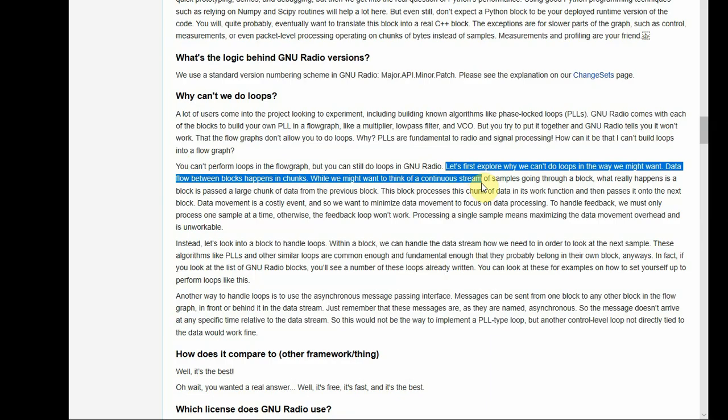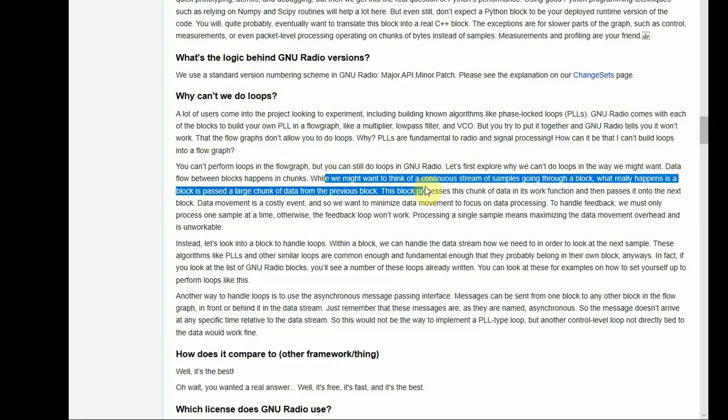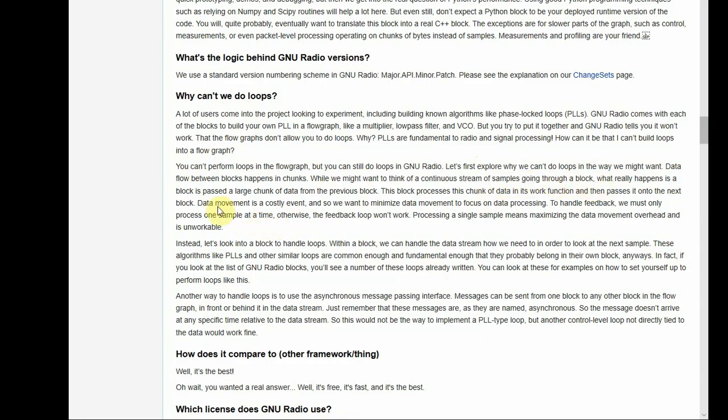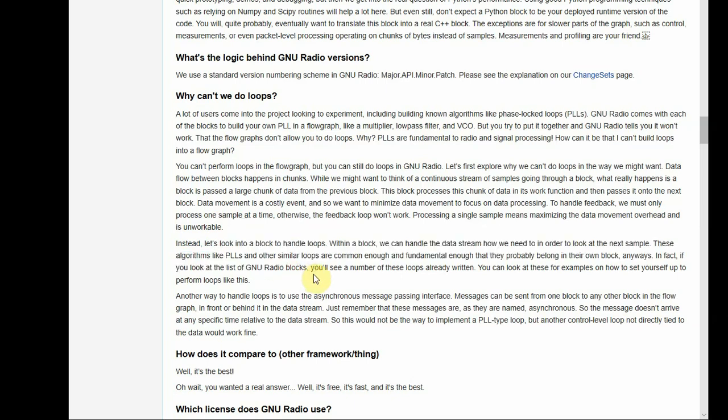The main point is this: you can't perform loops in the flow graph, but you can still do loops in GNU radio. Next explanation is interesting and quite reasonable. Let's first explore why we can't do loops in the way we might want. Data flow between blocks happens in chunks. It does not happen sample by sample. While you might want to think of a continuous stream of samples going through a block, what really happens is a block is passed a large chunk of data from the previous block. This block processes the chunk of data in its work function and then passes it onto the next block. Data movement is a costly event and so we want to minimize data movement to focus on data processing. To handle feedback, which is necessary for PLLs, we must only process one sample at a time. Otherwise, the feedback loop won't work. Processing a single sample means maximizing the data movement overhead and is unworkable. So that is why they make their own blocks and you can also make your own blocks and implement a PLL or any feedback algorithm through a for or a while loop.